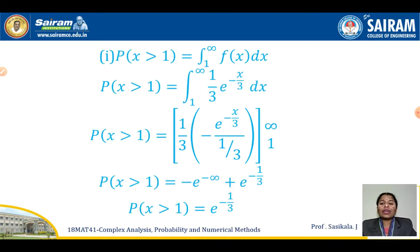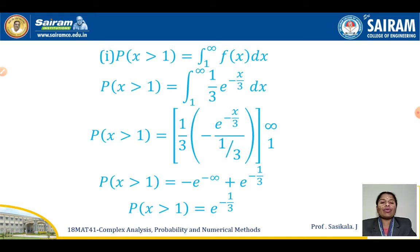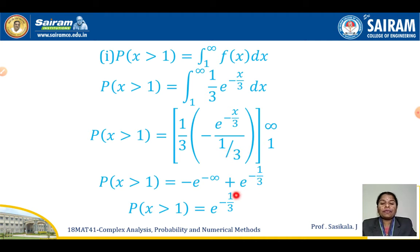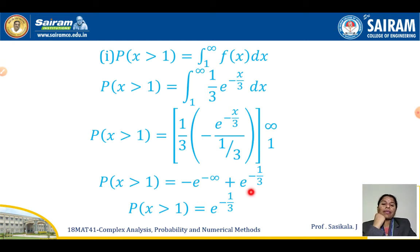For the first part, P(X > 1) means integrating from 1 to infinity. So the integral from 1 to infinity of (1/3) e to the power minus x by 3 dx. Integrating gives (1/3) times e to the power minus x by 3 divided by minus 1/3, from 1 to infinity. Substituting limits: e to the power minus infinity goes to 0, and we get the answer e to the power minus 1 by 3.